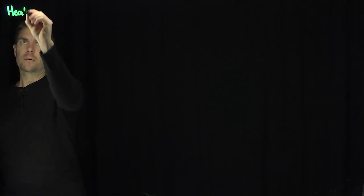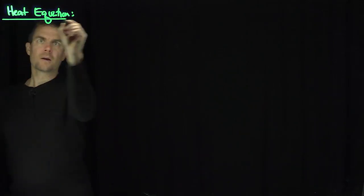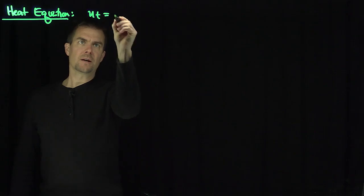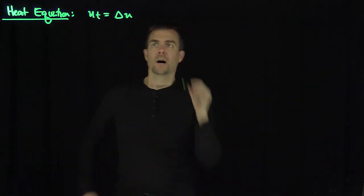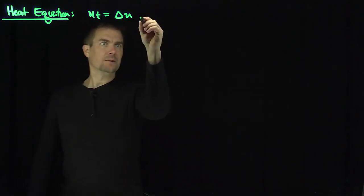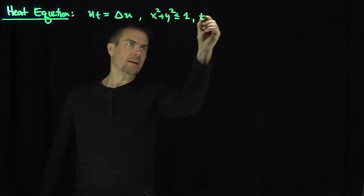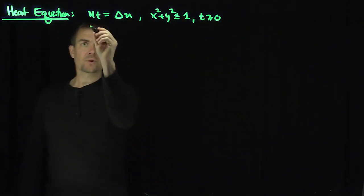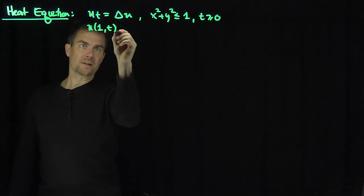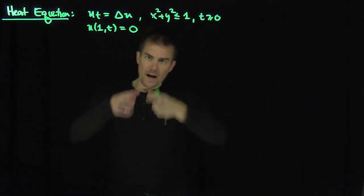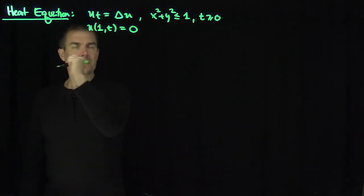The heat equation is u_t equals the Laplacian of u. We consider this equation on the unit disk: x squared plus y squared is less than or equal to 1, and t is greater than or equal to 0. On the boundary circle, u(1, t) equals 0 — in other words, on the boundary of that cylinder, the temperature is 0 for all time. It's insulated.